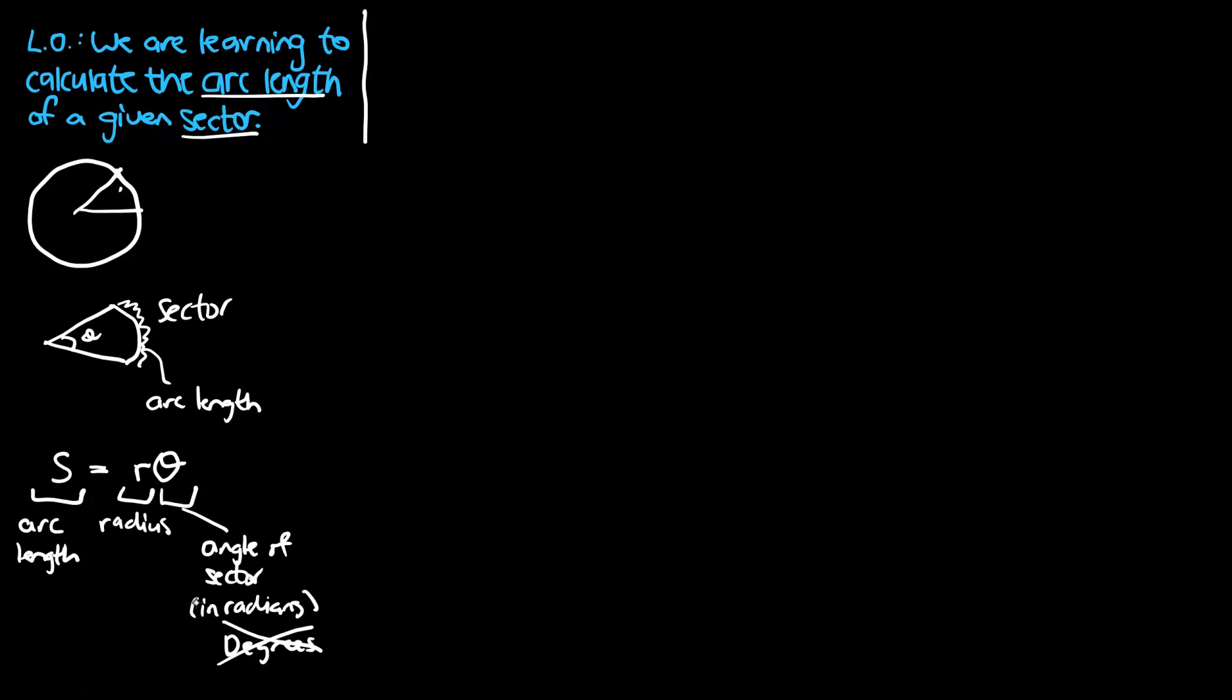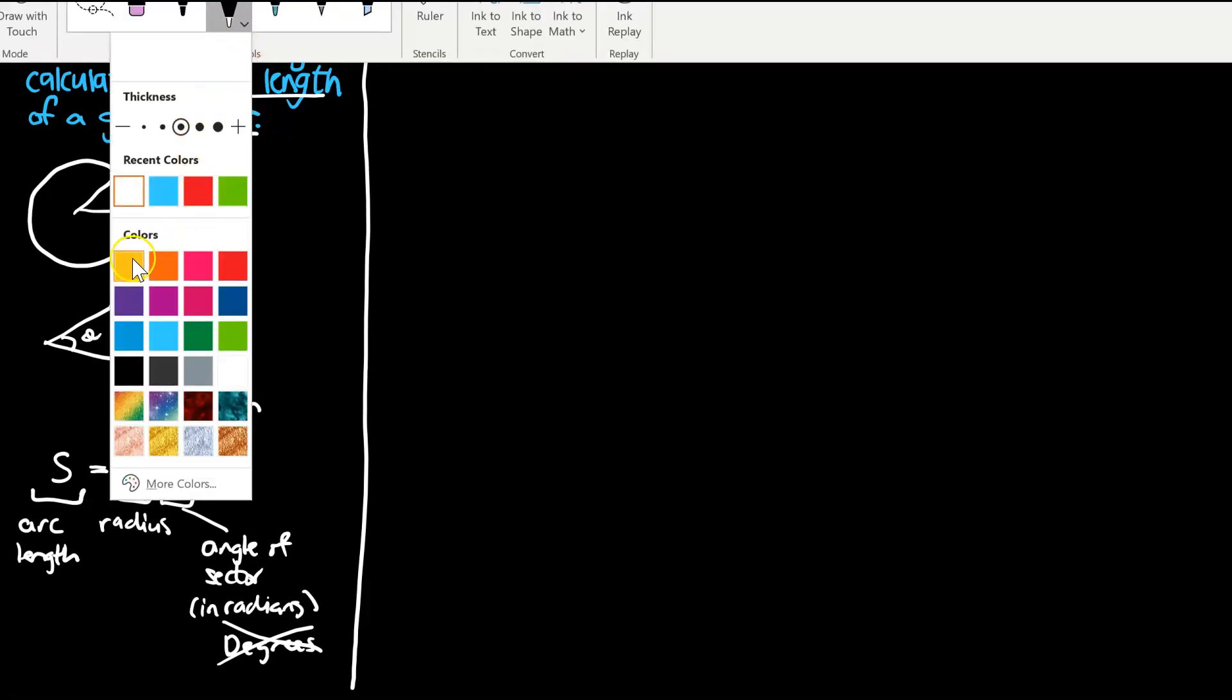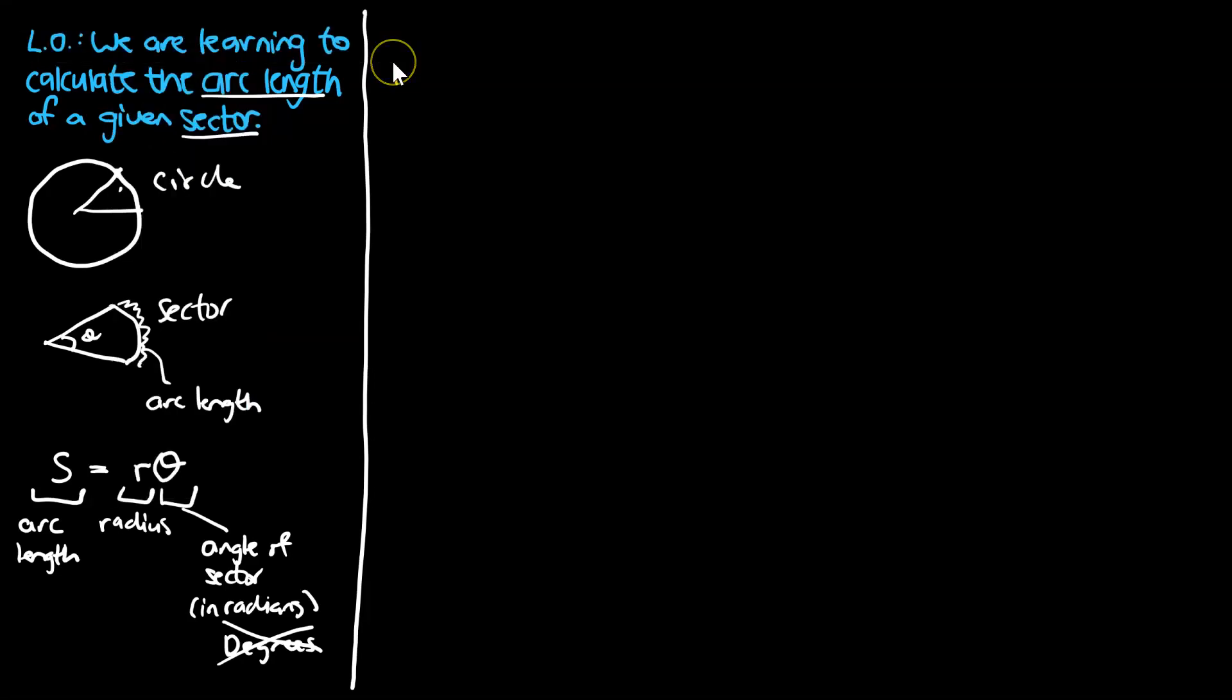So that was a quick overview of what we were doing. It starts off with a circle. You take a sector, or a bit of the pie out. That gives us the arc length and the angle, and then that links into the formula that we're going to be focusing on. Let's get into questions. There's a few different questions that can come out of the formula. Even though it looks quite simple, there's a lot that we need to go through.